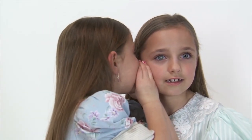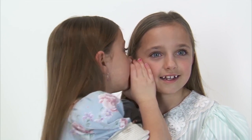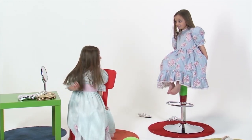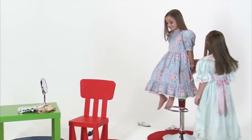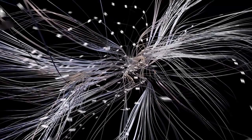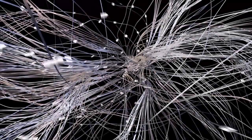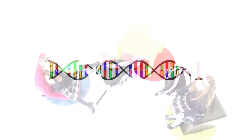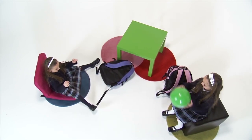Morphic resonance depends on similarity, and the organisms most affected by it would be identical twins because they're the most similar. This hypothesis predicts that if one twin learns something, the other twin — even if separated soon after birth — should be more likely to do the same thing. I think a lot of the evidence based on identical twins separated soon after birth showing remarkable similarities is really evidence for morphic resonance, rather than for a very strong genetic determinism as it's currently interpreted.